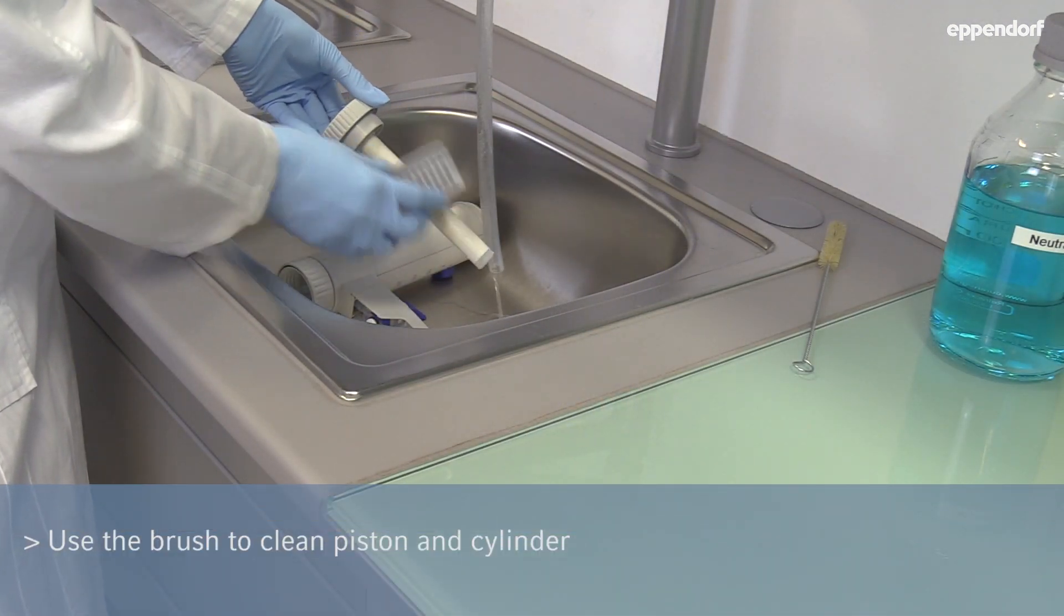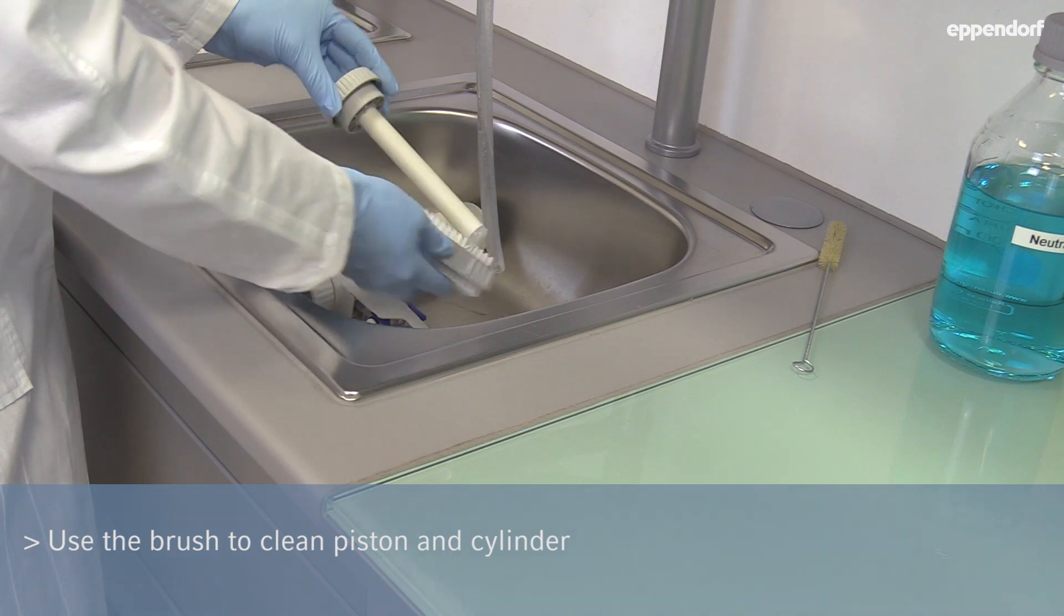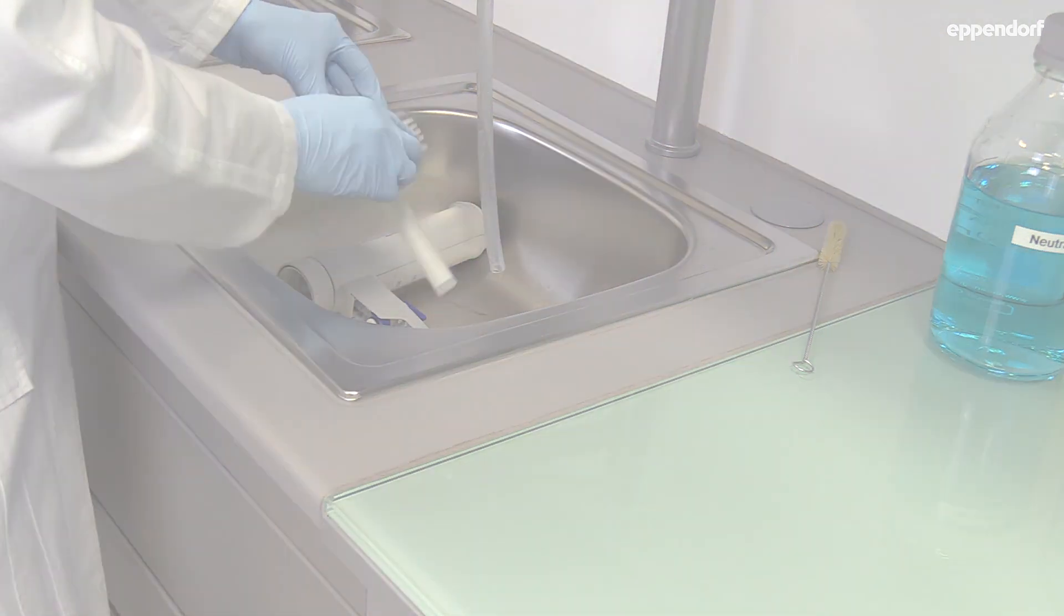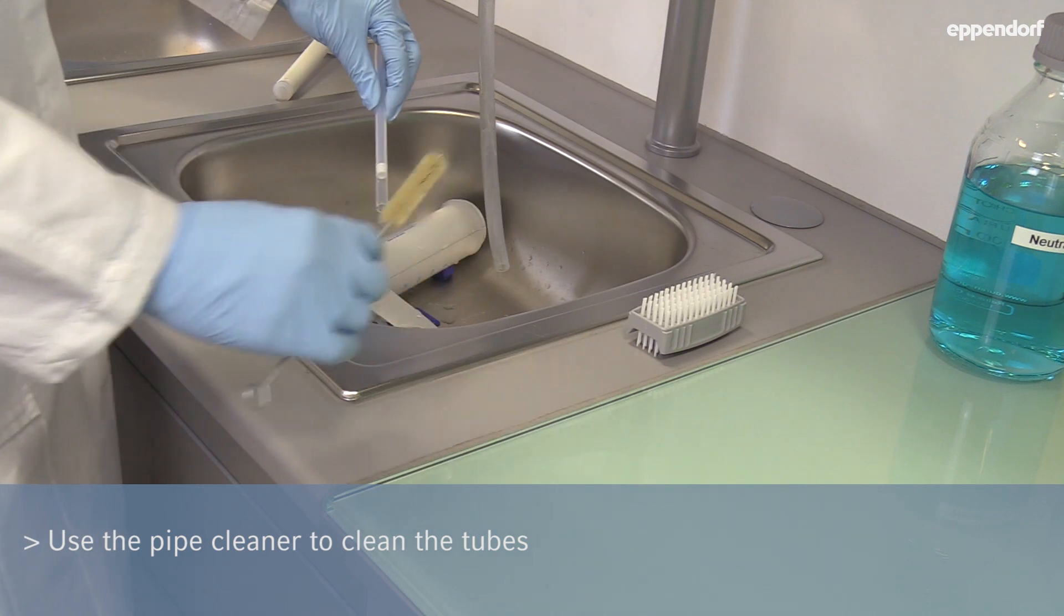Unscrew the piston mount and clean the piston and cylinder with the brush. You may use the pipe cleaner to clean the tubes.